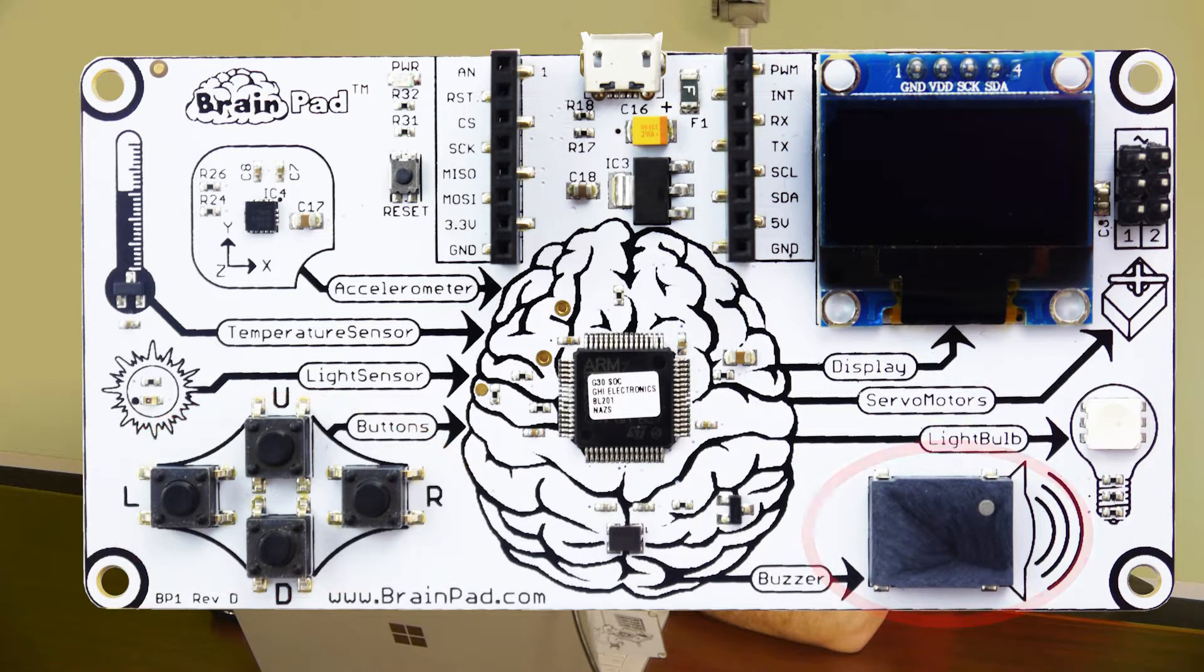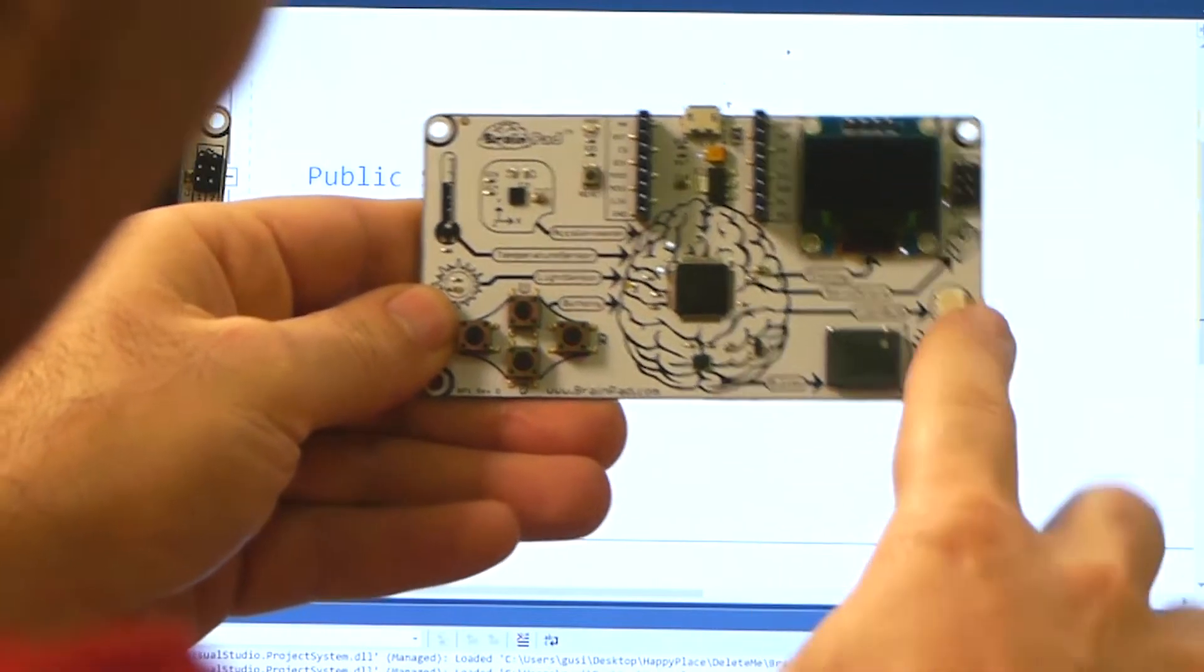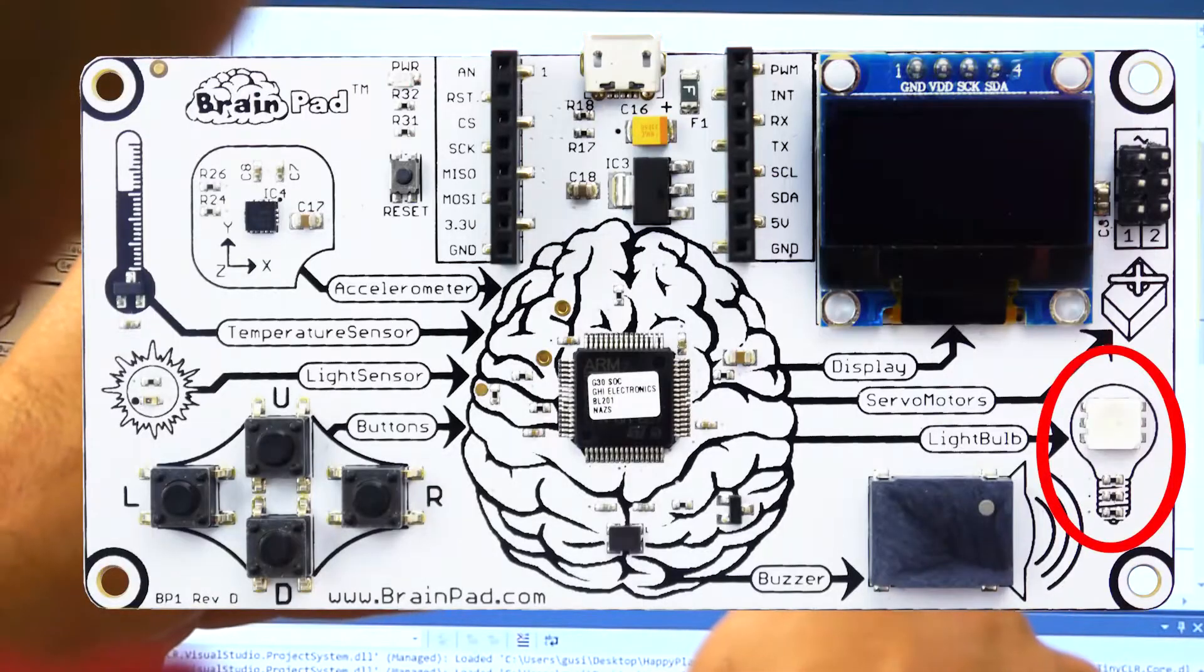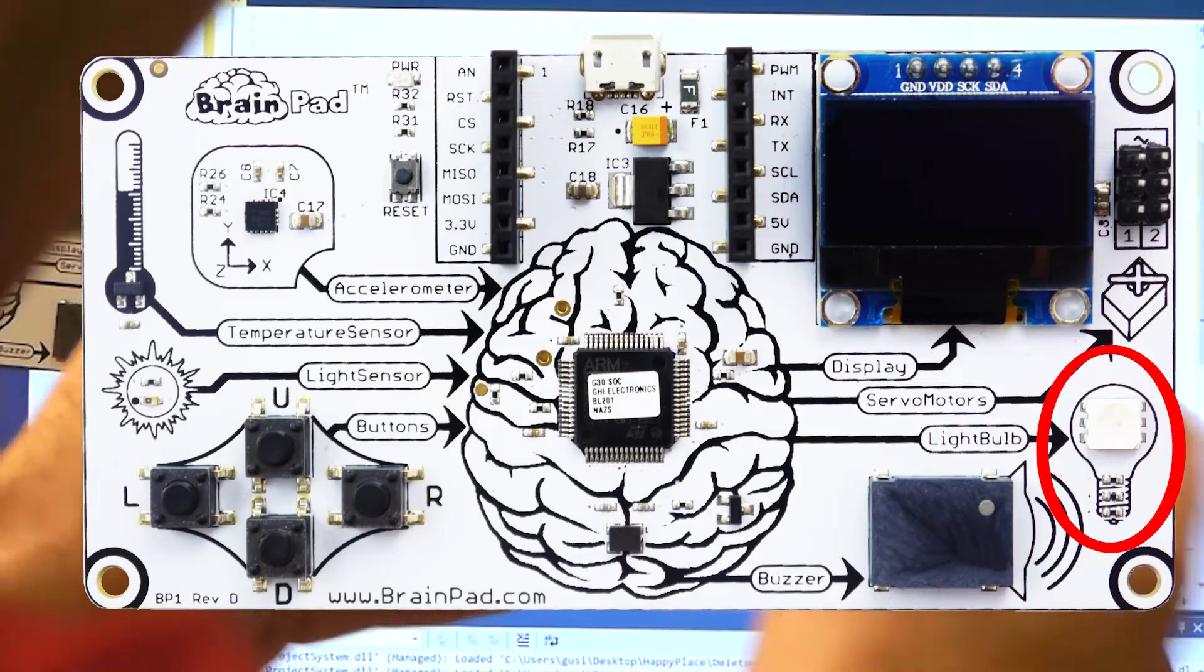And then on the other side, we have the buzzer that makes waves. Buzzer. And then, what's this one right here? That light. It's a light. Let's read what it says here. Can you read it for me? Light. Light bulb. Bulb, yes. Right bulb. Good job.